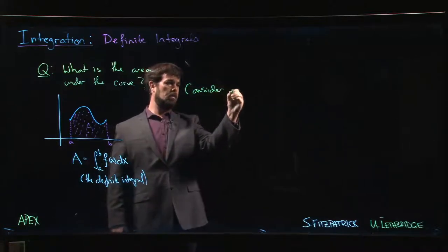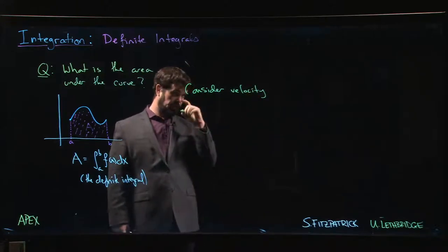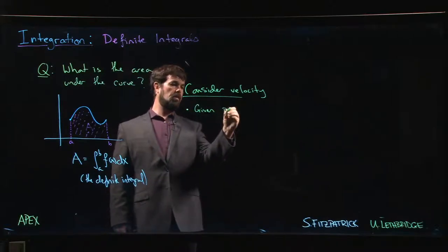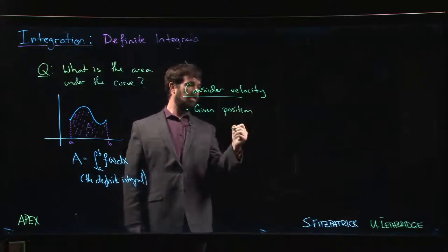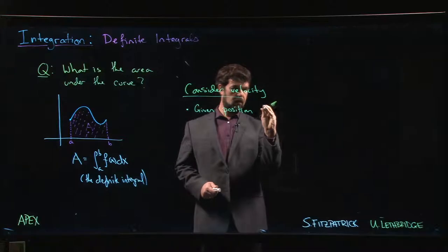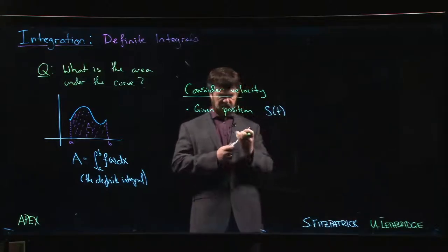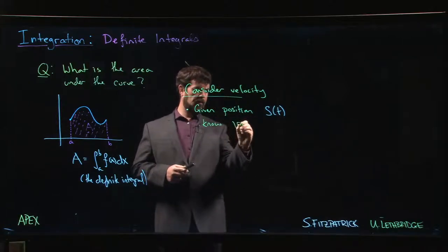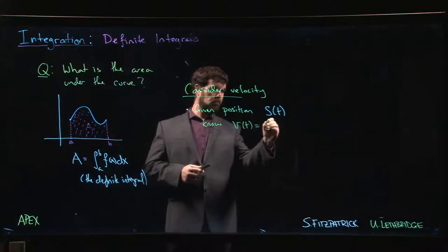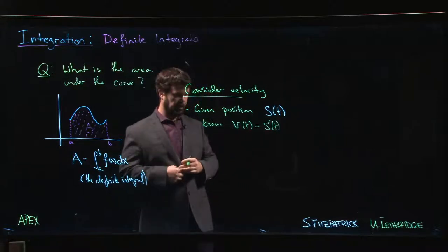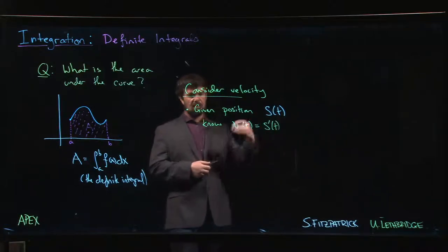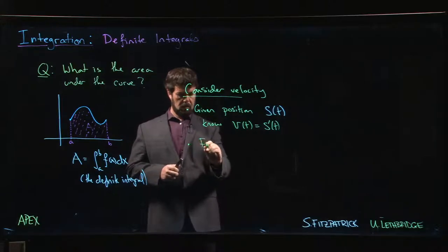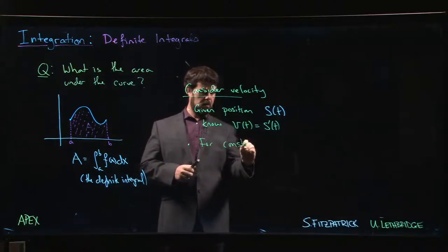We can think about velocity to see this connection. Consider position — let's call it s of t, since s is commonly used for position. We know that velocity as a function of time is just the derivative of the position function. So given the position, we take the derivative and we get the velocity. Another thing we know is that for constant velocity,